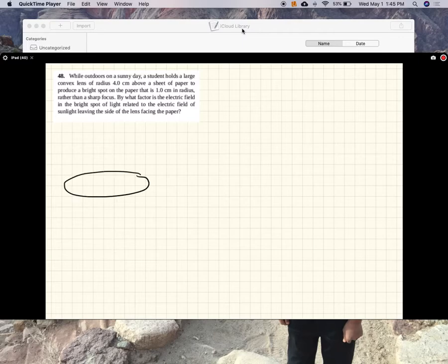All right, so essentially what this problem is saying is here's the lens, here is sunlight, and that's being focused to there. So what is the sunlight there, what are the ratios of the strengths in the electric field there and there?